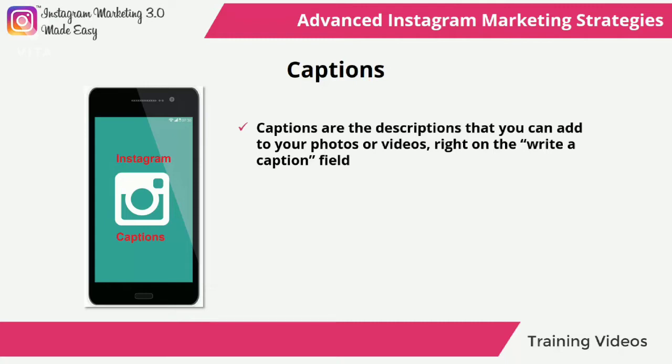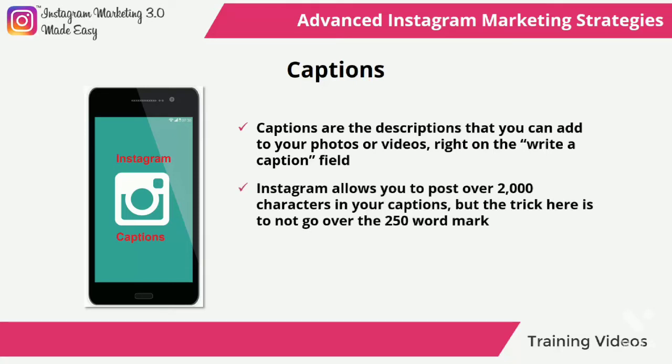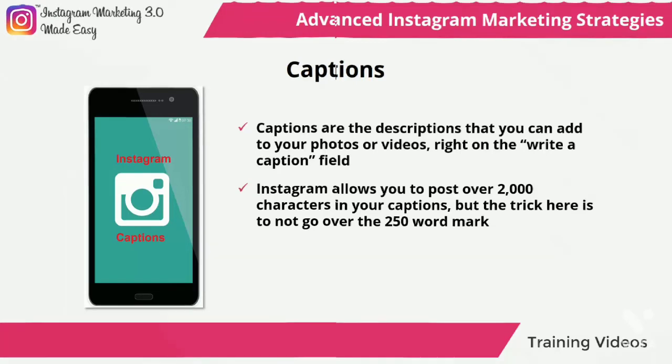The first rule about microblogging captions is that they have to be descriptive, brief, and simple. Instagram allows you to post over 2000 characters in your captions, but the trick is to not go over the 250-word mark. In fact, keeping it under 150 to 140 words is the ideal target. The idea is to use this brief caption for keywords relevant to your industry. If you need to add a web address, make sure to shorten it using a web service such as bit.ly.